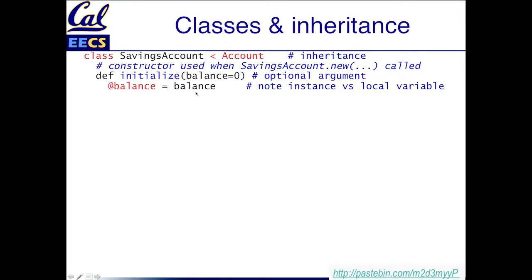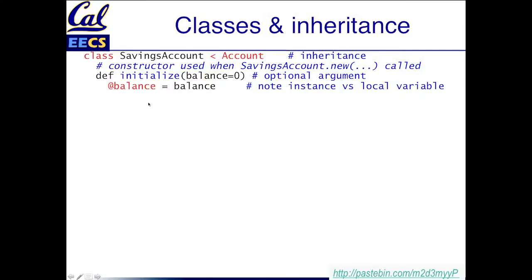What is this initializer going to do? It's going to take one argument which is the initial balance. Because I've given the argument a default value in the function definition, I can call the new function with no arguments and balance will default to zero. So you can have optional arguments with default values in Ruby. When I call the constructor it's going to take the balance passed in and assign it to an instance variable. Instance variables begin with a single at sign, so @balance is an instance variable — not to be confused with plain balance with no at sign, which is just a local variable that disappears once we're out of the function's scope.